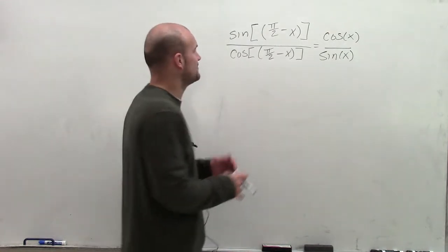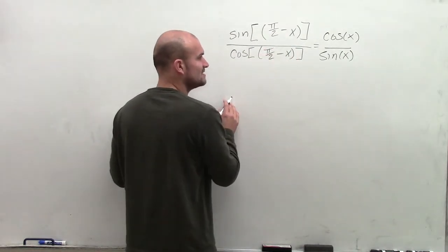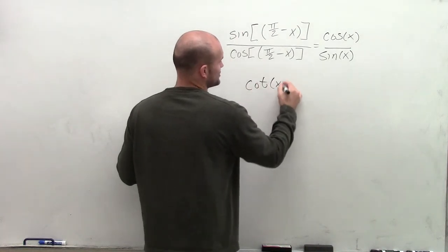Yeah, absolutely. We can use the quotient identities. We know that cosine of x divided by sine of x is equal to cotangent of x.